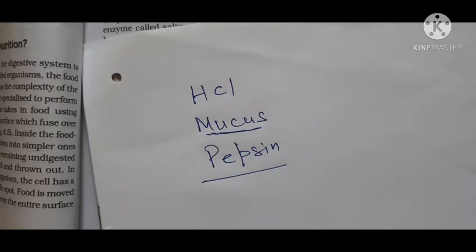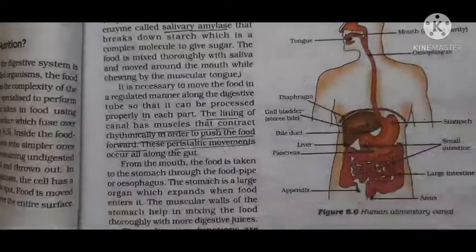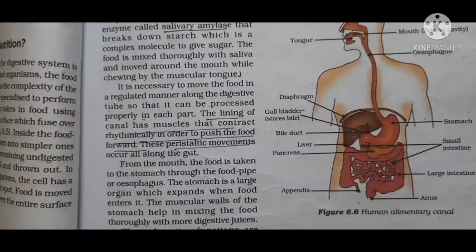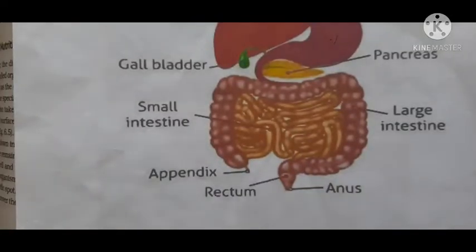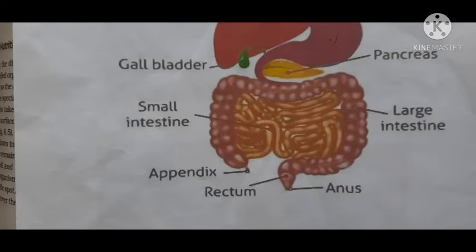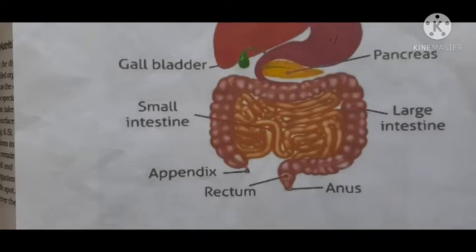After the stomach, the food goes into the small intestine, as you can see in the picture. The small intestine is the longest part of the alimentary canal. It is a very long, highly coiled structure — it is coiled so that it fits into the small abdominal space. Even though it is the longest part, we call it the small intestine because it is very narrow.